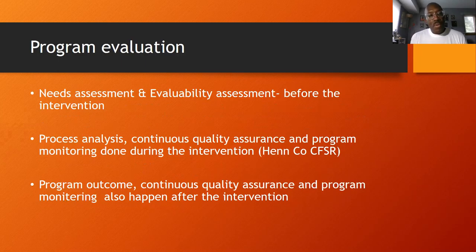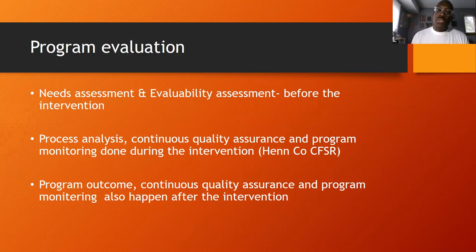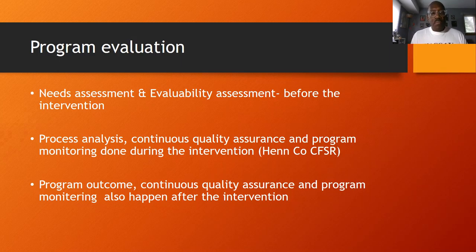When thinking about program evaluation, we typically start with a needs assessment. If I'm working in a community agency that provides mental health services to children, I first need to do a needs assessment — what are the needs of the program and what goals are they trying to accomplish? Then I need to look at the evaluability assessment: if I'm providing a service, can I do it in such a way that I can actually measure whether it's happening? These are things we do before the intervention. We also look at process analysis, continuous quality assurance, and program monitoring — things that happen during the intervention.